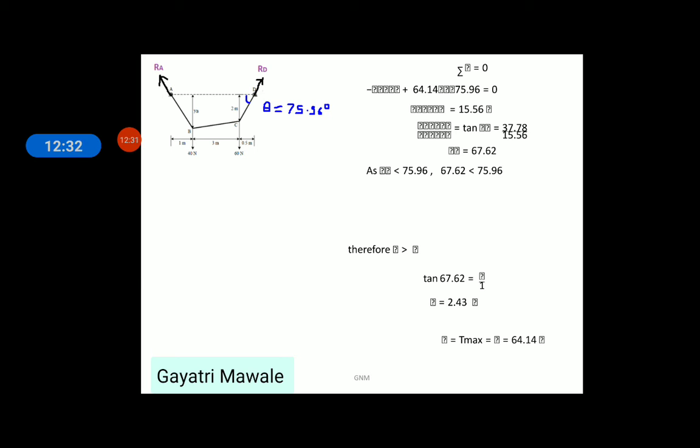Now, as theta at A point is less than theta at D point. Therefore, tension in CD part of the cable must be greater than tension in AB part of the cable. And, tension in DC part of the cable, we have calculated it. It is equals to RD and is equals to 64.14 N. This is how we can calculate tension in CD part of the cable that is maximum tension.